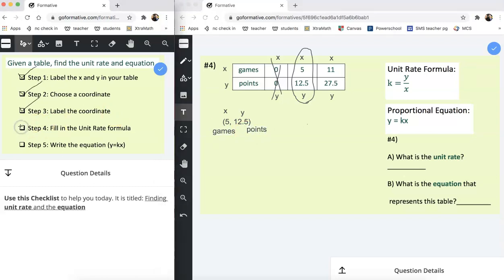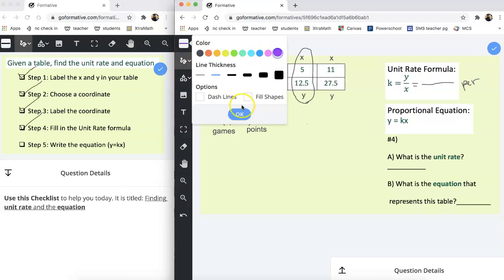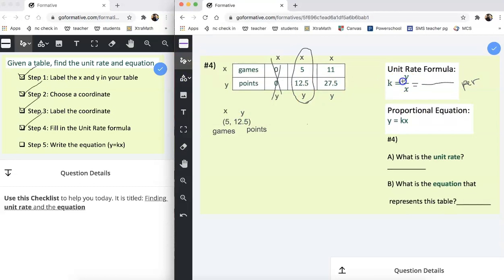And then step four, fill in the unit rate formula. So I'm ready to find the unit rate and also from there I can figure out the equation. I draw an equal sign, I draw a fraction bar, I write the word per to go with that fraction bar and then I grab a new color. And I'm looking first for the y value and I look over here and the y value is 12.5 points. So that's what I'm going to type in the numerator, 12.5 points.